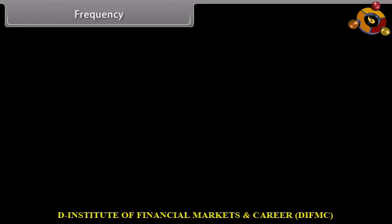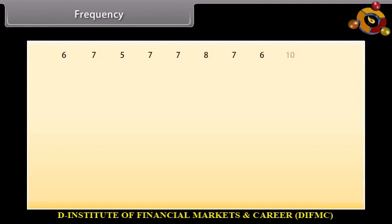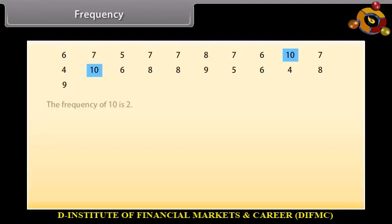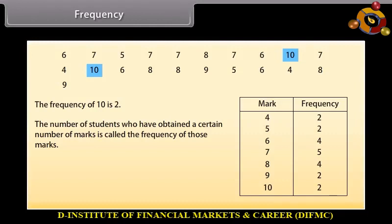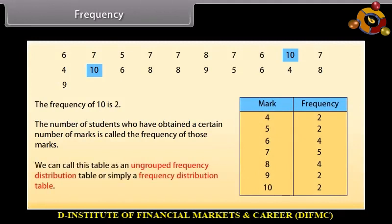Frequency: These are the marks obtained by 20 students in science. The highest number scored here is 10, and two students have scored 10 marks, so the frequency of 10 is 2. The number of students who have obtained a certain number of marks is called the frequency of those marks. We can write this data in a table form — showing marks and their frequencies — called an ungrouped frequency distribution table, or simply a distribution table.